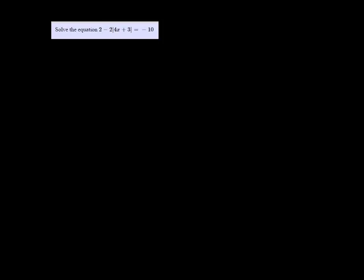Okay, we're solving the equation 2 minus 2 times the absolute value of 4x plus 3 equals negative 10. In order to do this, we need to get the absolute value part by itself.